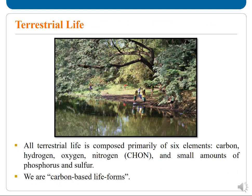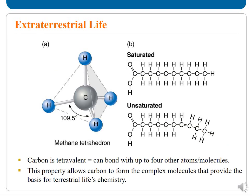All terrestrial life is composed primarily of 6 elements: Carbon, Hydrogen, Oxygen, and Nitrogen — which we call CHON — and small amounts of Phosphorus and Sulphur. We are all carbon-based life forms. Carbon is tetravalent, meaning it can bond with 4 other atoms and molecules. This property allows carbon to form complex molecules that provide the basis of terrestrial life's chemistry.